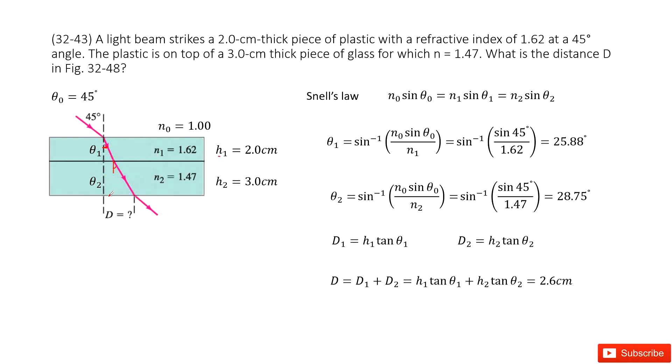Question asks you the distance d in this picture. So very easily we can consider, this d should include this part, plus this part. And luckily we know this thickness is h1, so it should be d1, so this one we can consider as d1, this one we can consider as d2. So d should equal to d1 plus d2.